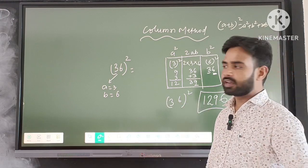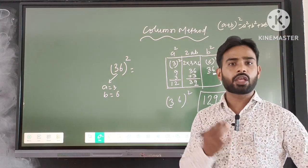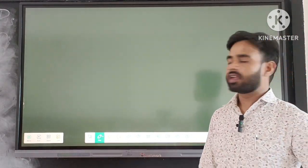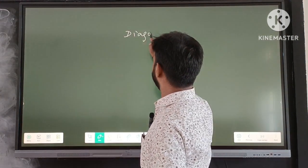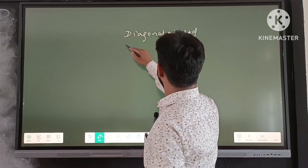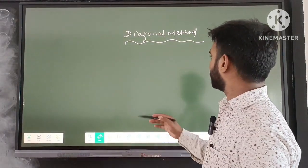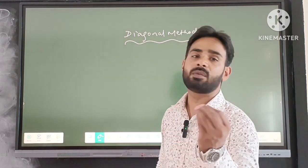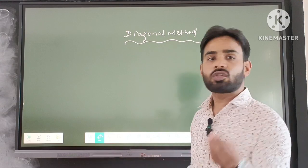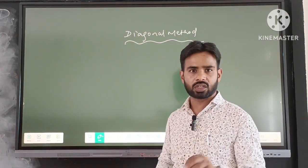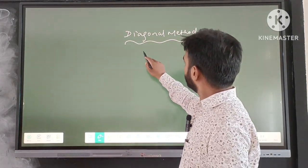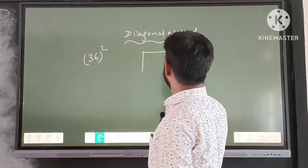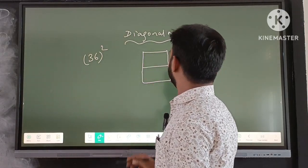Now we are going to move ahead to the diagonal method. In the diagonal method we use almost the same concept but there is a slight difference in the layout. Since we have to find the square of a two-digit number, we will use a 2×2 matrix. If it were a three-digit number, we would use a 3×3 matrix. So for the square of 36, which has two digits, we take a 2×2 matrix.